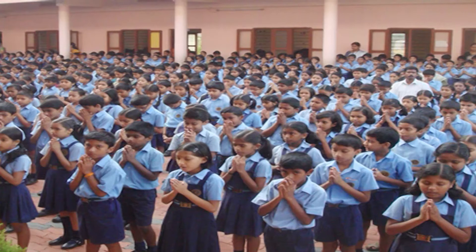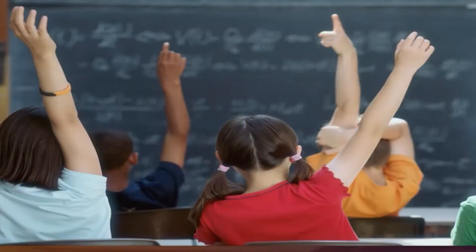Formal Education institutions are administratively, physically and curricularly organized and require from students a minimum classroom attendance. An institution is legally bound to conduct all the above formalities in formal education. Simply put, formal education corresponds to the education process normally adopted by schools and universities.